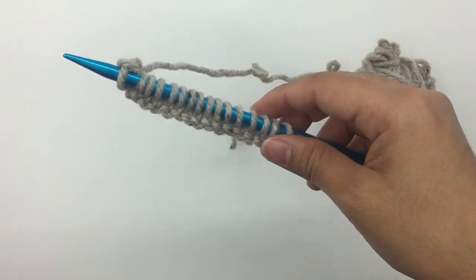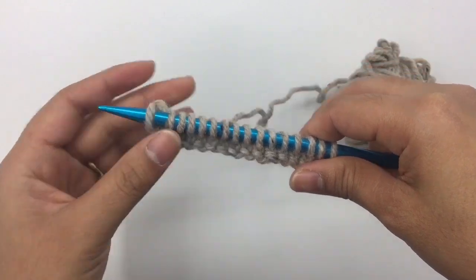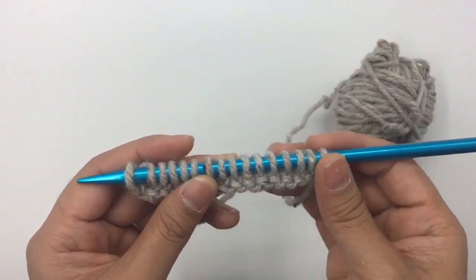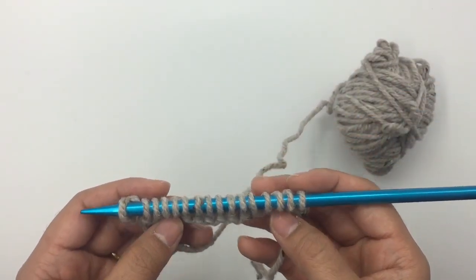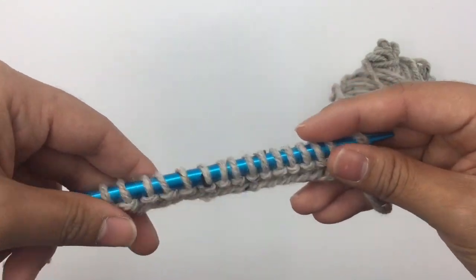So this is how we knit, and this is the knit stitch. It looks like this on the front and on the back. That's what it looks like.